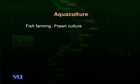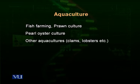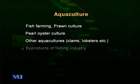Aquaculture includes fish farming, prawn culture, culture of pearl oysters, and other types. In some areas of the world, people culture clams, freshwater clams, and lobsters. When we grow fish in large ponds through fish farming, we can get protein — a good form of protein from these fishes. There are also many by-products of the fishing industry, which are used in cosmetics and other industries.